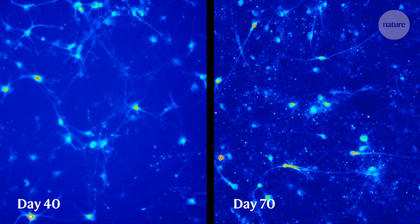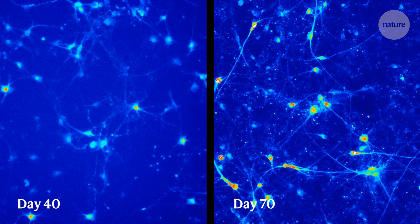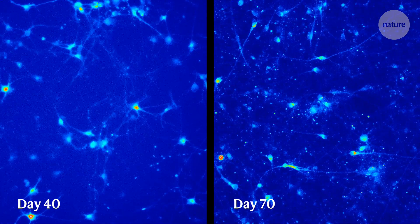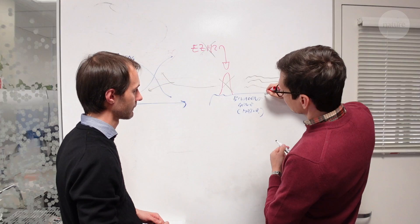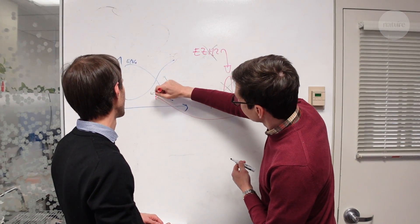They looked at subtler changes too—to the cells' cytoskeletons, metabolic processes, and DNA. And one set of changes stood out: a gradual decrease in the levels of certain markers on certain genes.